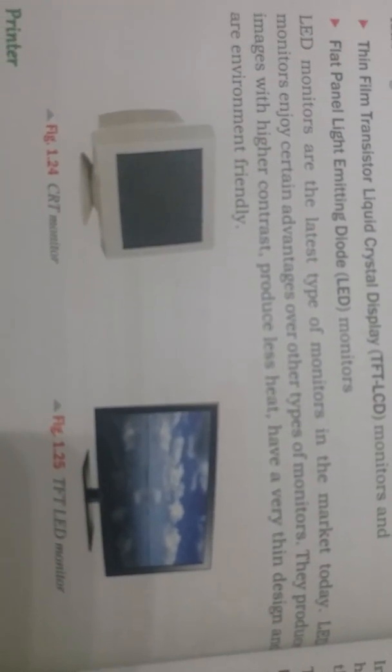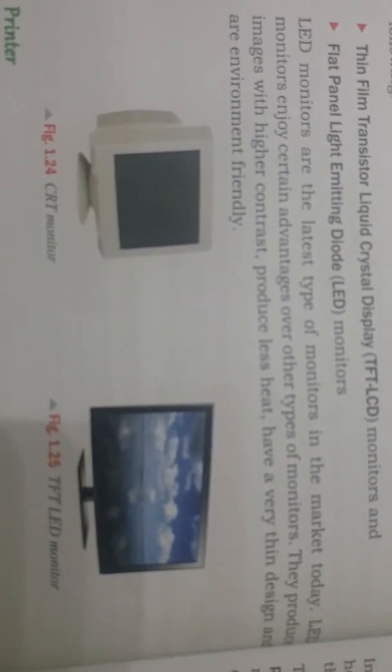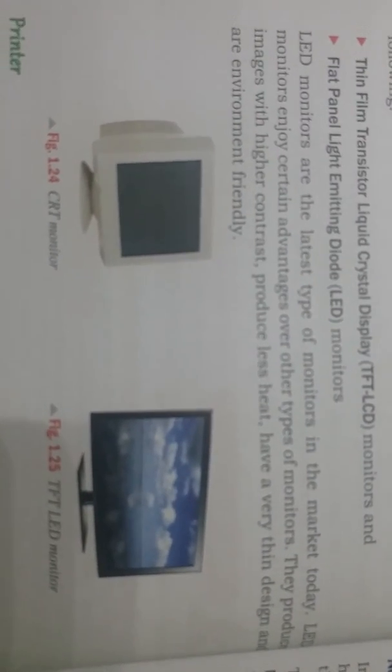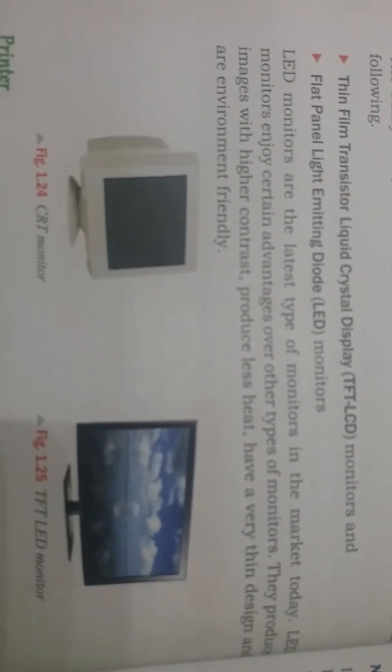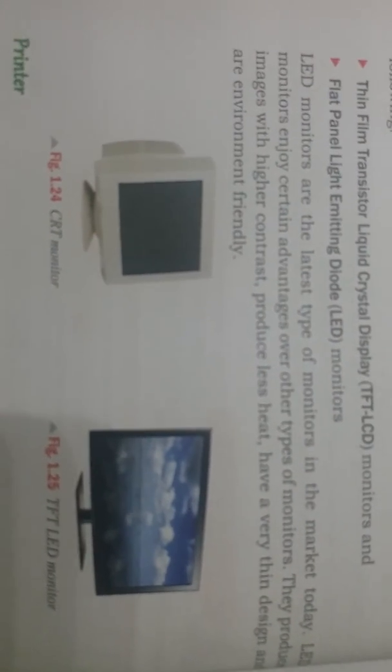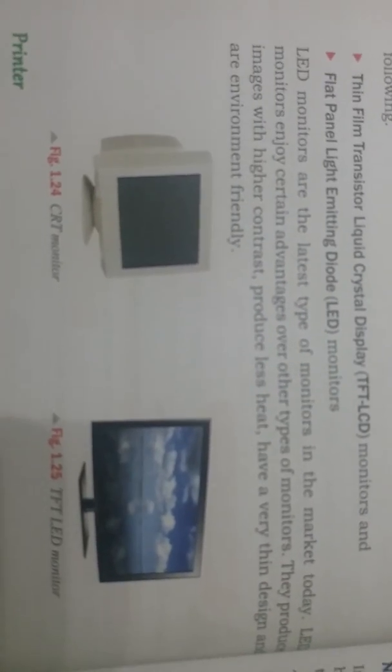The output we get on the monitor is considered a soft copy output — we can only see it but cannot touch it. Another type of output is hard copy output, which means output we can touch with our fingers and also see. Hard copy output can be taken using the device known as a printer.